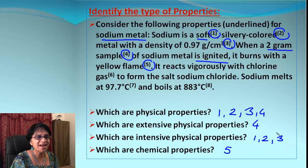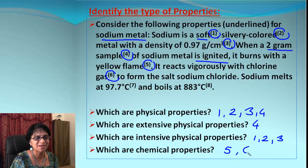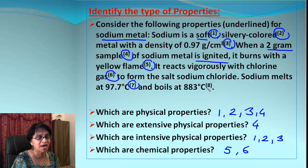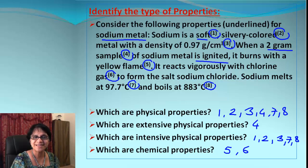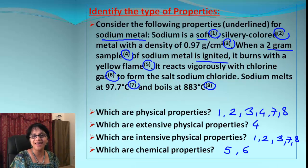A metal ignited and burning with a yellow flame — that's burning, which is a chemical property. It also reacts vigorously with chlorine gas — reacting is a chemical property too. Finally, sodium melts at 97.7°C and boils at 883°C — melting and boiling points are physical properties that remain the same, so they go under intensive physical properties. I hope you enjoyed the video — see you next time, bye bye!